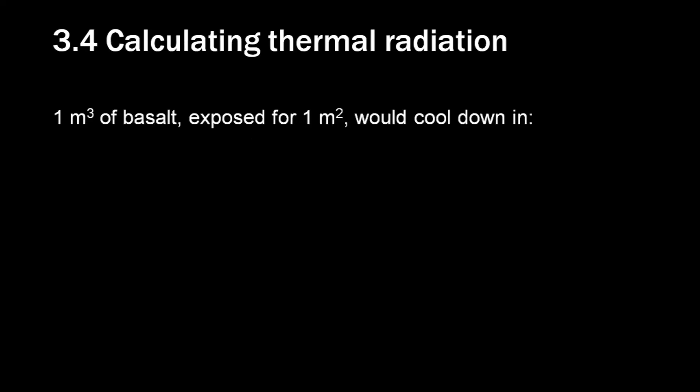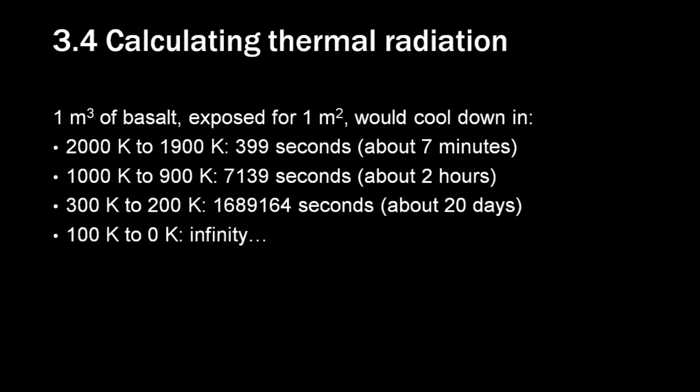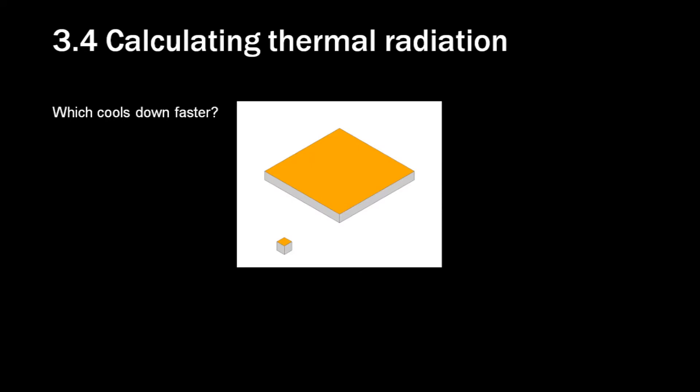The area is in square meters, and the temperature is in kelvins. Let's give an example first. If we would have one cubic meter of basalt being exposed for only one square meter, how long would it take to solidify? Like I said, it strongly depends on the temperature. If it would cool down from 2000 Kelvin to 1900 Kelvin, it would take 399 seconds, which is about 7 minutes. From 1000 to 900 Kelvin, it takes about 2 hours. From 300 to 200 Kelvin, it takes about 20 days. And from 100 to 0, it takes forever. It will never reach 0. So this is very strongly non-linear.